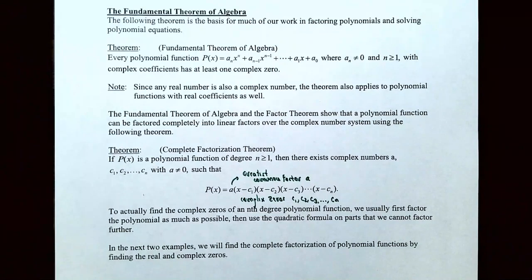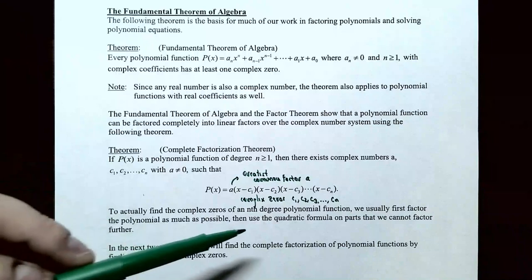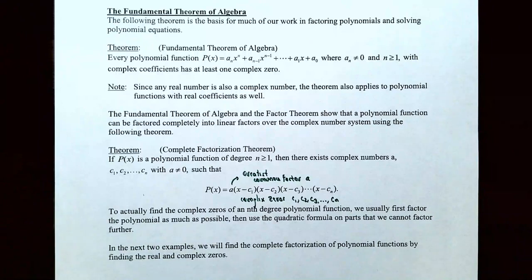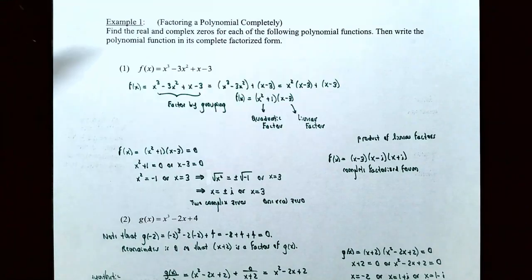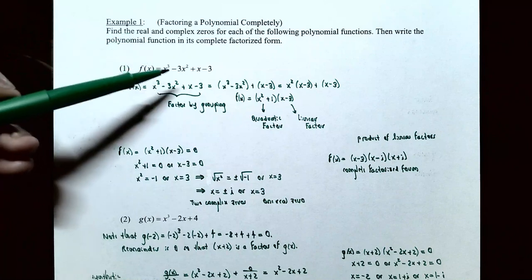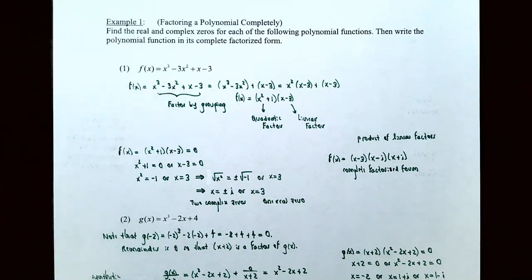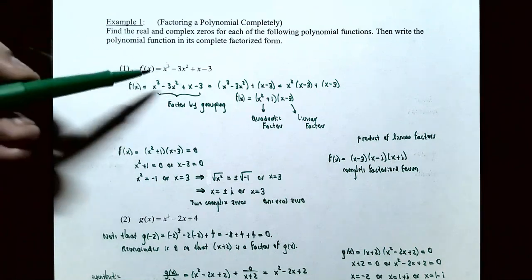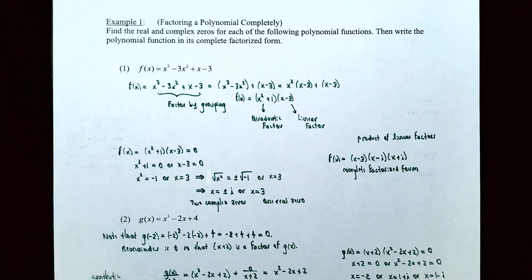In the next couple of examples, we're going to find the complete factorization of polynomial functions by finding both the real and the complex zeros. Example 1: factoring a polynomial function completely. Find the real and the complex zeros for each of the following polynomial functions, then write the polynomial function in its complete factorized form.